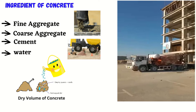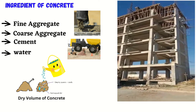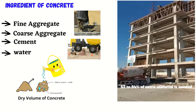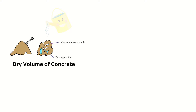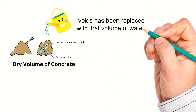After the addition of water into the mix, the voids are removed and the mix gets compacted, so the wet volume reduces. About 52 to 54 percent of extra material is needed to make up this volume reduction by void filling and to have a dense and compacted concrete. The volume decrease after the addition of water in dry concrete is because the voids have been replaced with the volume of water.